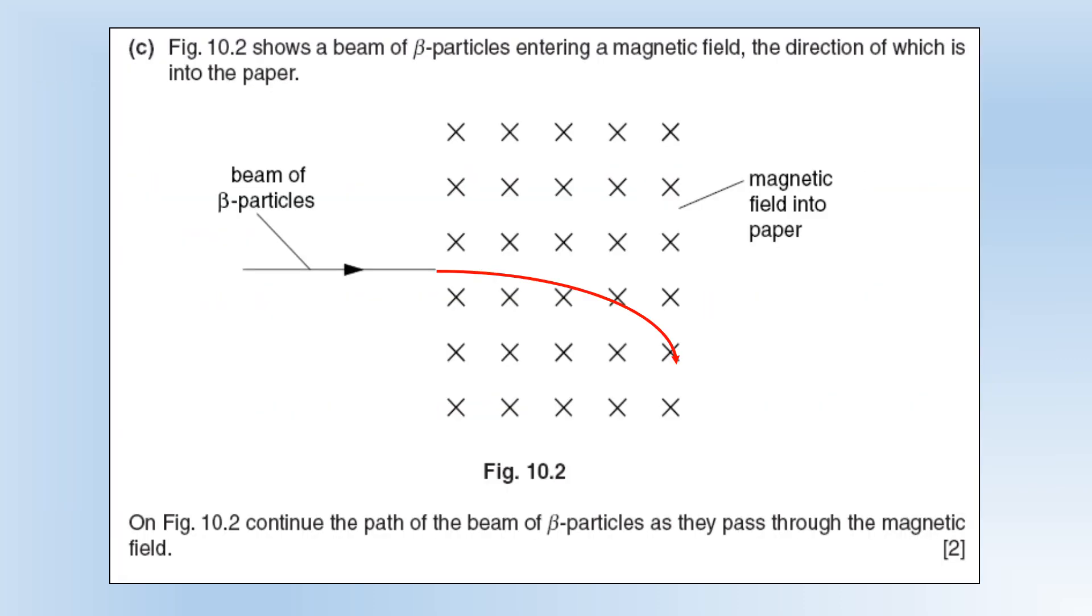Finishing off, looking at splitting the particles using a magnetic field. It tells us the direction of the field is into the paper. Using Fleming's left hand rule, my finger is pointing into the plane of the page, particles are traveling across to the right, so my thumb tells me a positive particle would go up the page which means the negative particle is going to go down the page. Just using Fleming's left hand rule here, and that finishes off this video looking at this set of tasks.